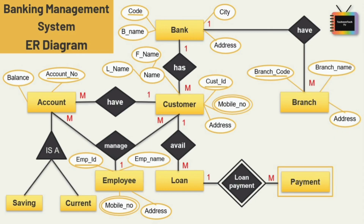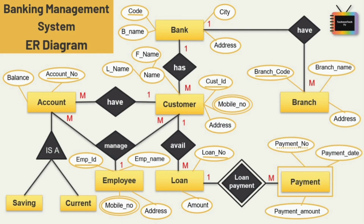Next is the entity loan, which has two attributes: loan number and amount. Loan number is the key attribute. Lastly, we have the entity payment, which has three attributes: payment number, payment date, and payment amount. Payment number is the partial key, so we denote this with a dotted underline because the payment entity is a weak entity.